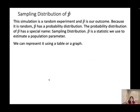This simulation is a random experiment, and P-hat is our outcome. Because it is random, P-hat has a probability distribution. The probability distribution of P-hat has a special name: the sampling distribution. P-hat is a statistic we use to estimate the population parameter.